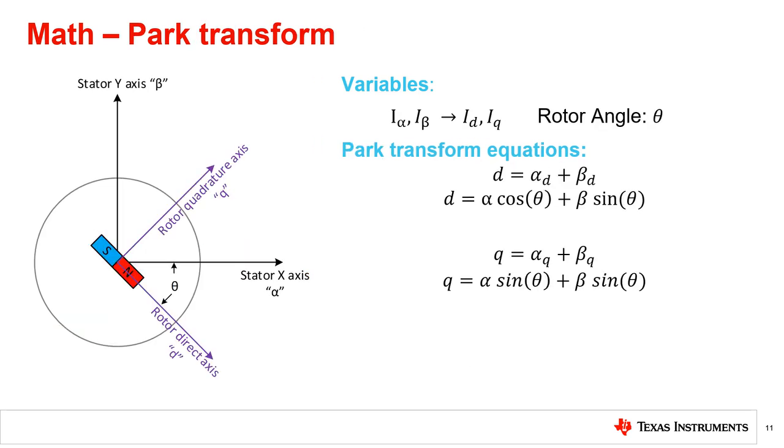Proceeding with the Park transform, we now involve a new variable in our equations, the rotor angle theta. With the Park transform equations, we calculate the direct and quadrature components of the phase currents. What we are doing here is relating the stator's phase currents in alpha and beta terms to the rotor's position and field orientation, which is defined by theta.